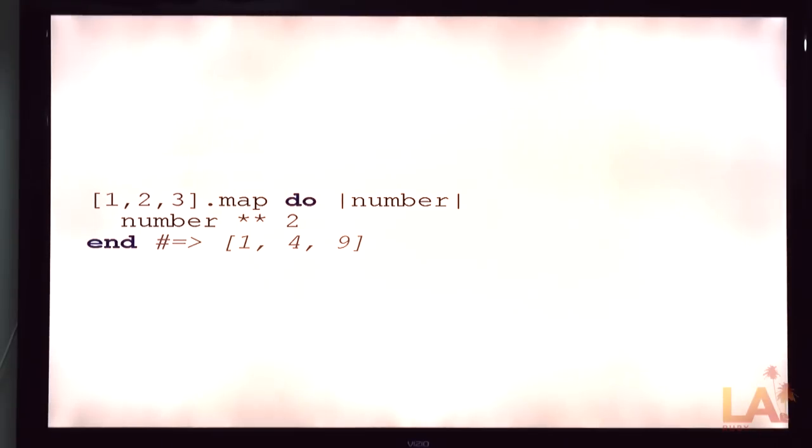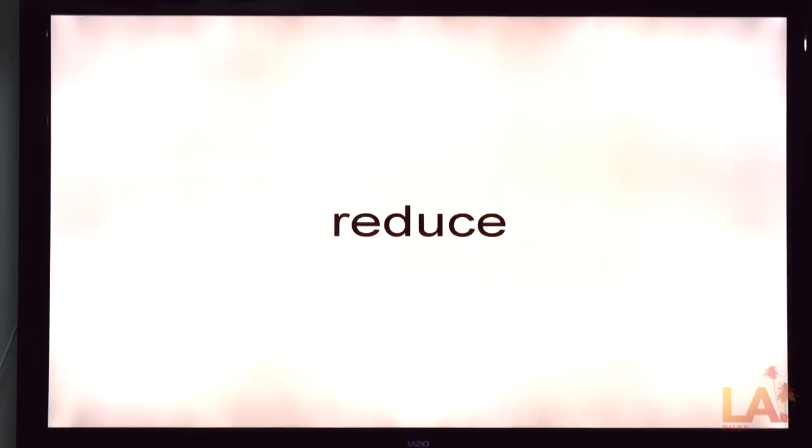And each, which we started off with, pretty simple. Just you pass a block in and you get each item will get passed through the block. Map is for those times when you need to transform a list into another list. Which is one of those kind of all the time kind of things. So here we're just squaring, we're producing a list of the squares from the original.